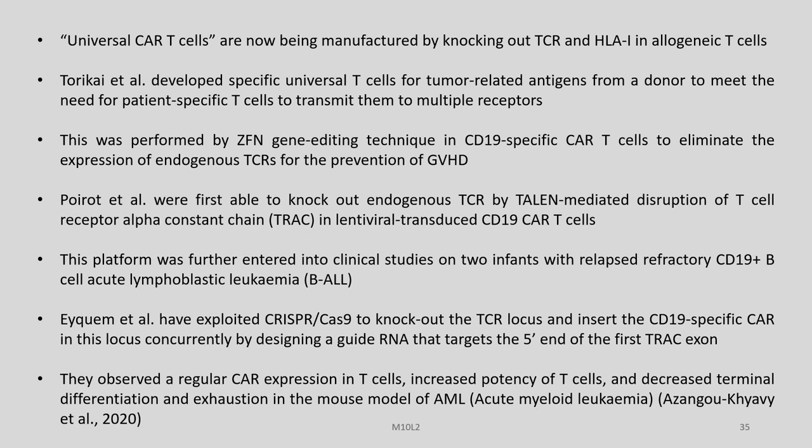Universal CAR T-cells are now being manufactured by knocking out TCR and HLA-1 in allogeneic T-cells. Torikai et al. developed specific universal T-cells for tumor-related antigens from a donor to meet the need for patient-specific T-cells to transmit to multiple recipients. This was performed by ZFN gene editing in CD19-specific CAR T-cells to eliminate the expression of endogenous TCRs for the prevention of GVHD.